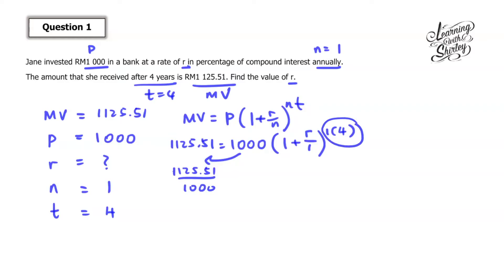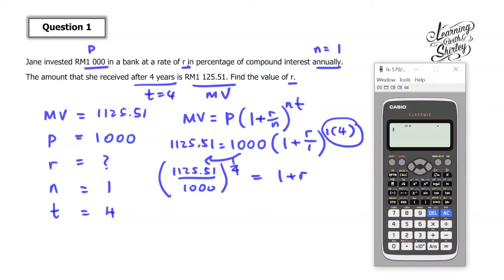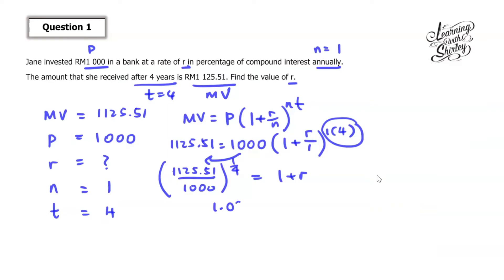When we move the power 4 to the left-hand side, it becomes the 4th root, or the whole thing to the power of 1 over 4. So it equals 1 plus R. Now we take out the calculator and calculate the bracket first: 1,125.51 divided by 1000 equals, then raise to the power of 1 over 4, and we get 1.03. So 1.03 equals 1 plus R. To find R: 1.03 minus 1 gives 0.03. Since R is in percentage, R equals 3%.